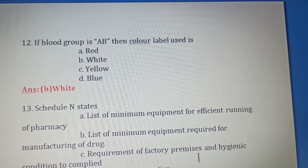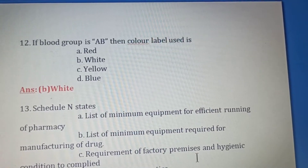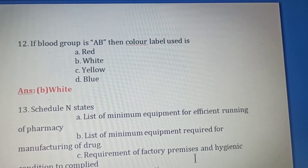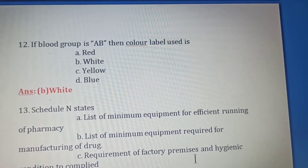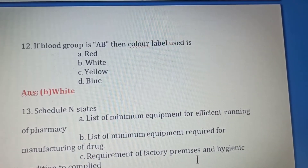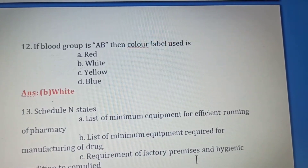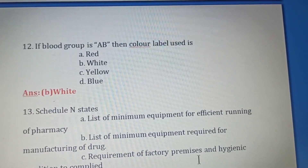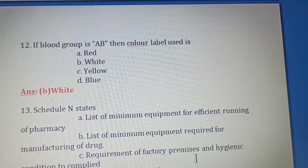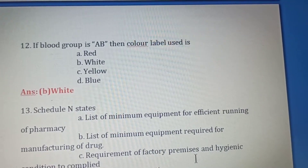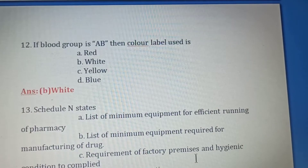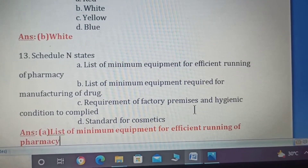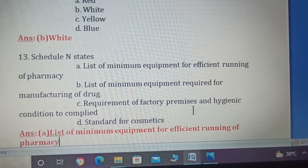Twelfth question: If blood group is AB, then which color label is used? Option A: Red. Option B: White. Option C: Yellow. Option D: Blue. For blood group AB, Option B — white — is the right answer.